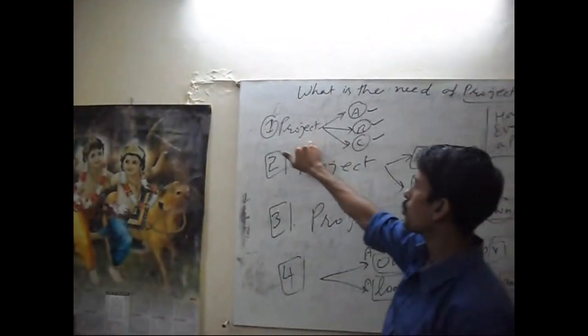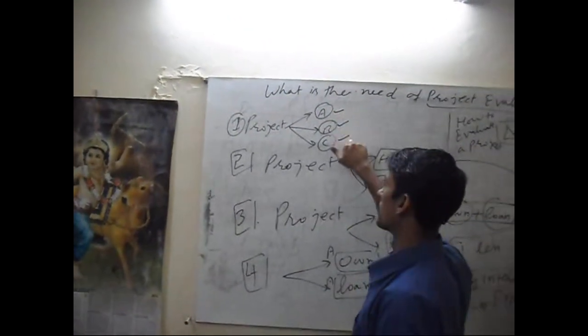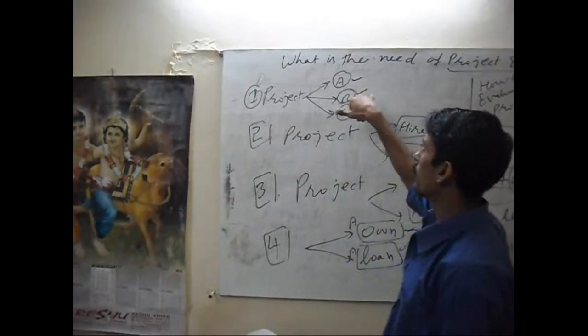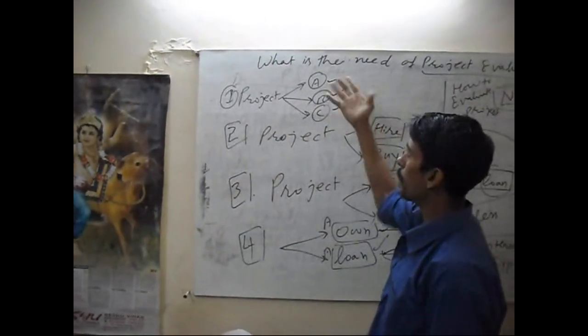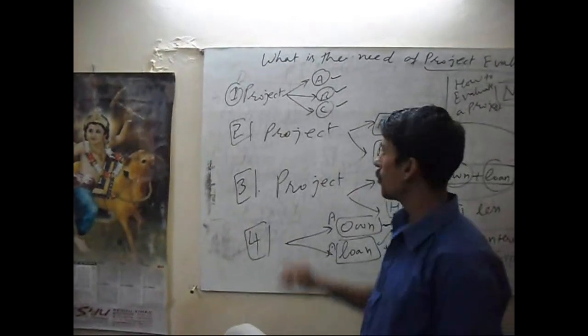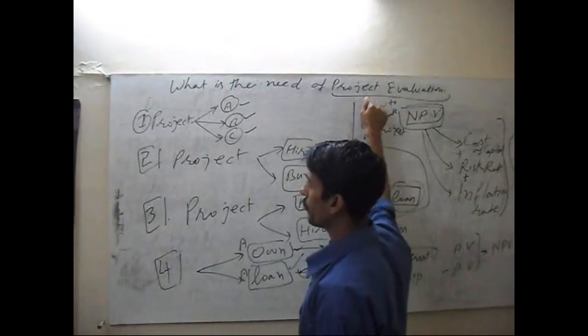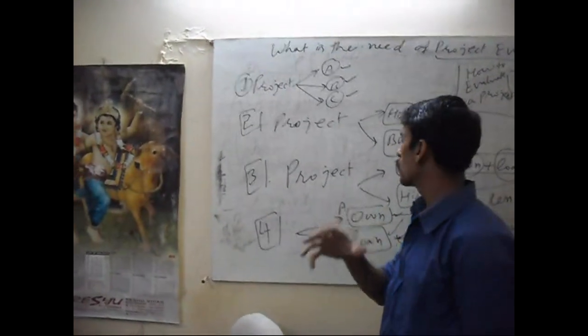First, when you have to choose the best project. Suppose three machines A, B, C - if you want to buy any one out of three machines, which is the best? This will be calculated in project evaluation. Second, when you have to choose the project on the basis of hire or buy. One company wants to buy and the same company also wants to hire - which is the best option?